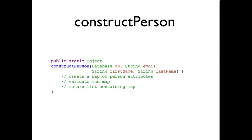Again, let's look at the implementation. The job of constructPerson is to make a map out of the person attributes passed in, validate that that map seems legal, and return a list containing the map.